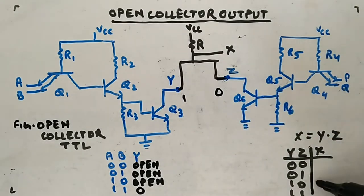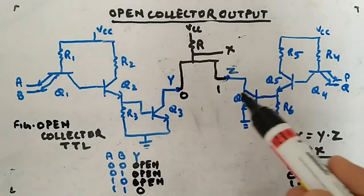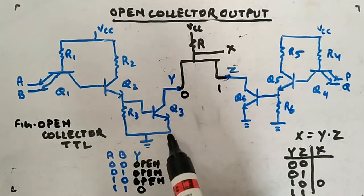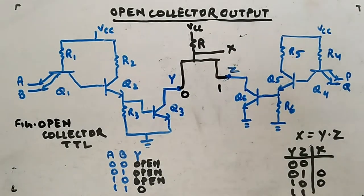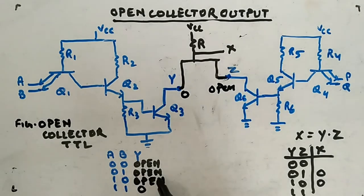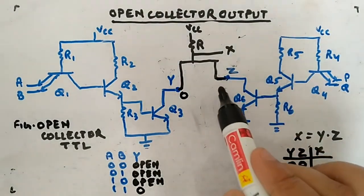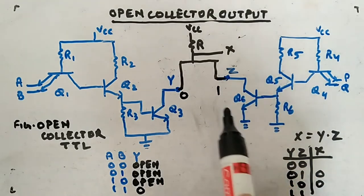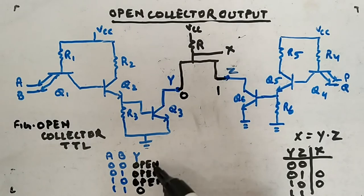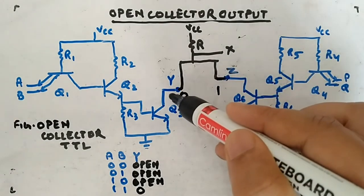Now consider the opposite case: this side is 1 (open) and this side is 0. Output 1 means open — there is no connection here, so X is not connected from this side. But here output 0 means it is connected to ground through Q3, so X gets grounded. When both are 0, from both sides you are getting 0, so X is 0 as well.